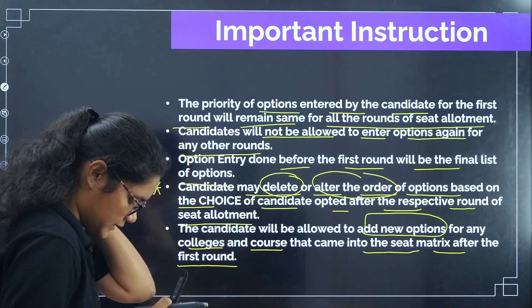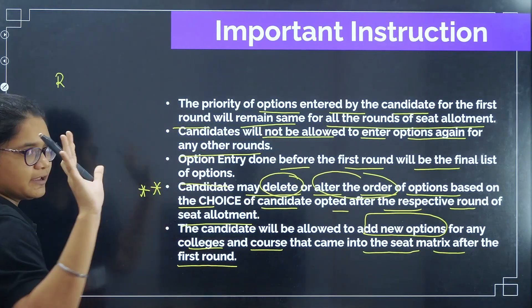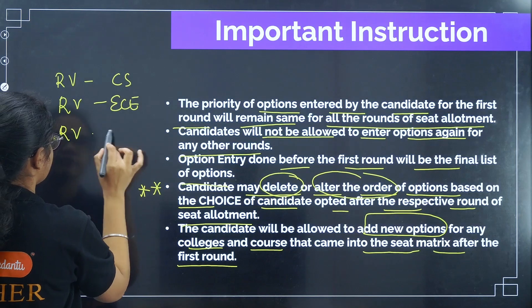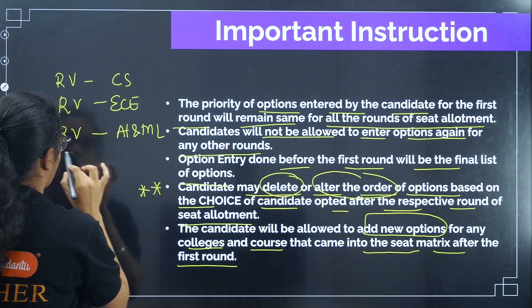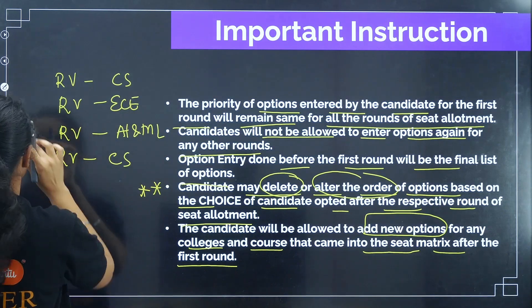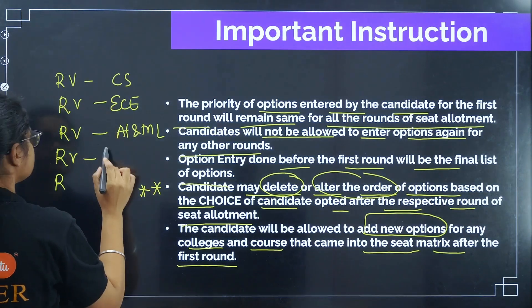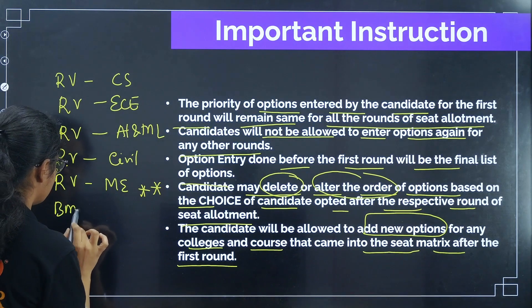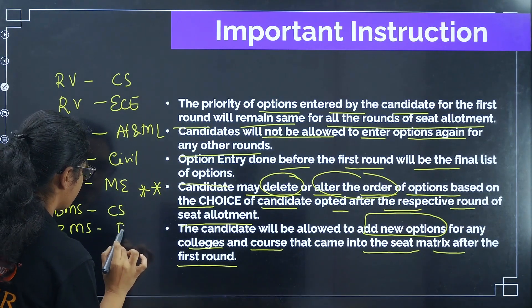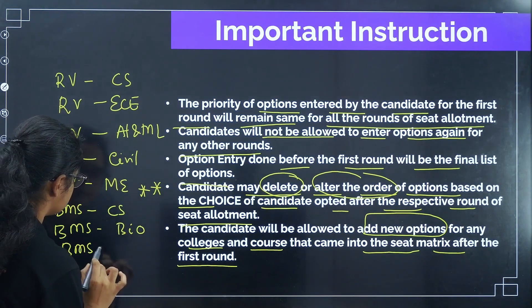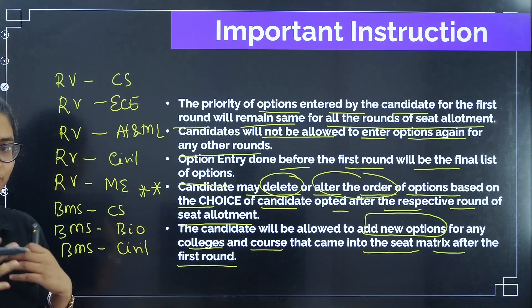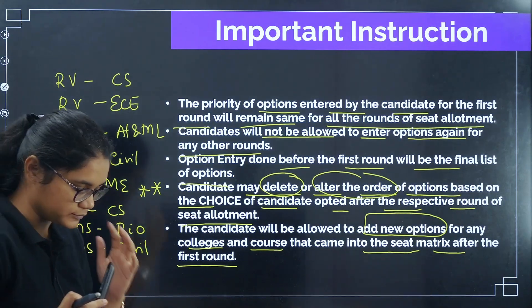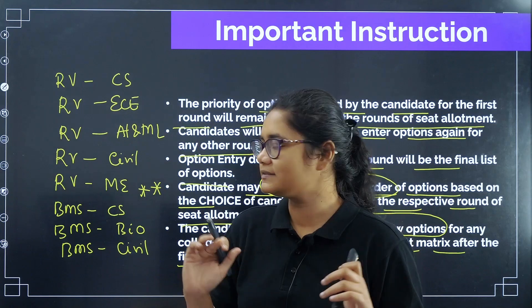Let us take an example to understand this. Suppose you have selected 5 options: RV Computer Science, RV ECE, RV AI and ML, RV Civil, and RV Mechanical. And suppose you have also added BMS Computer Science, BMS Biotechnology, and BMS Civil. So in this hypothetical example, you have made these 7 options or preferences in the Round 1 option entry. Obviously you should give many more choices, but I am just explaining with these 7.